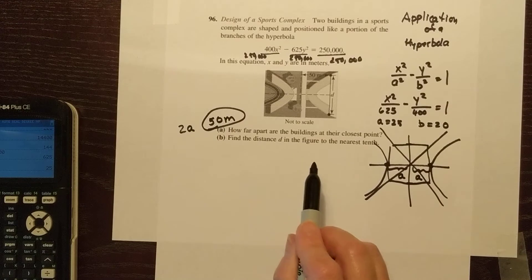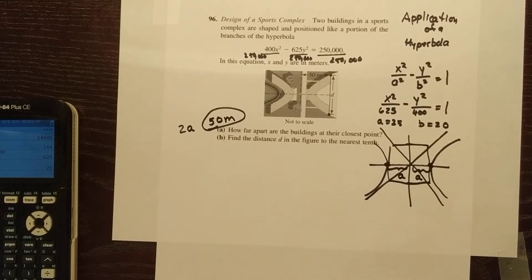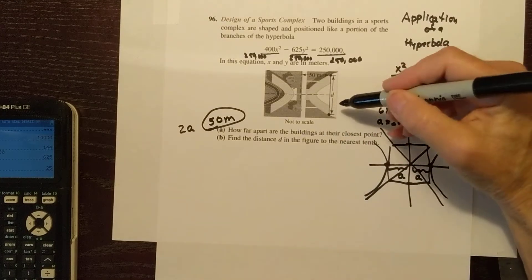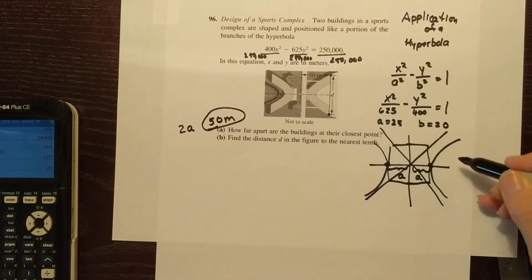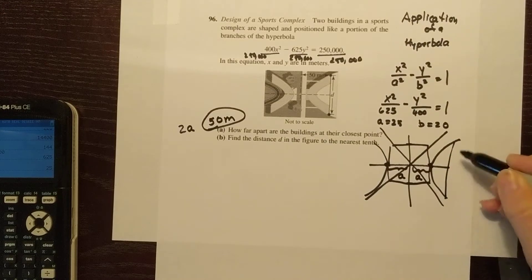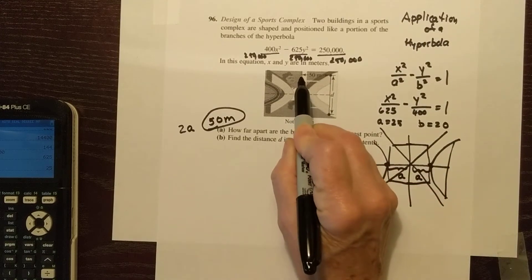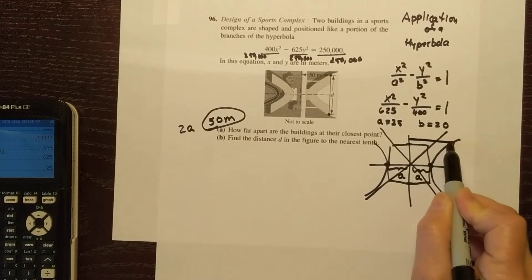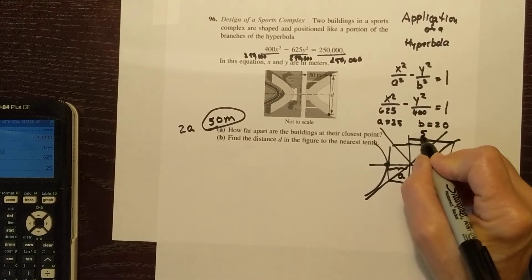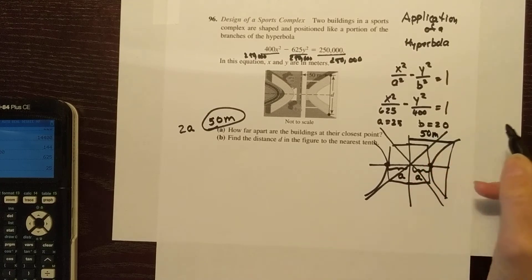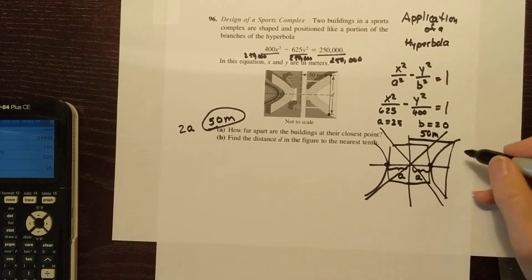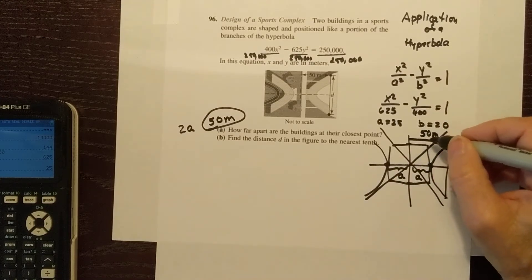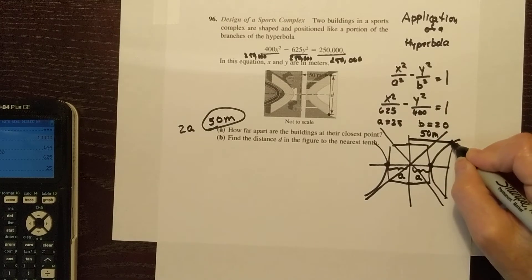Then part B says find the distance d in the figure to the nearest tenth. Now I gotta look at this picture. The d says it's this vertical distance across one of the branches right here. But they give me the point. They say from this to this point is 50 meters. Okay, well that's 50 meters across the x.